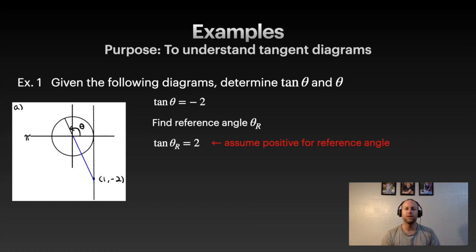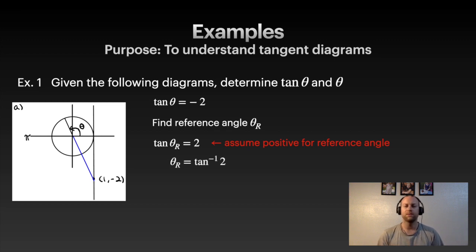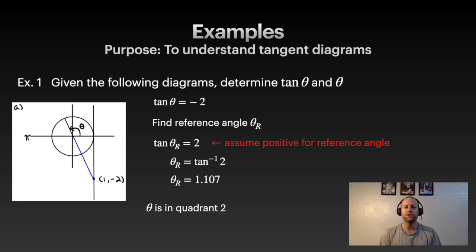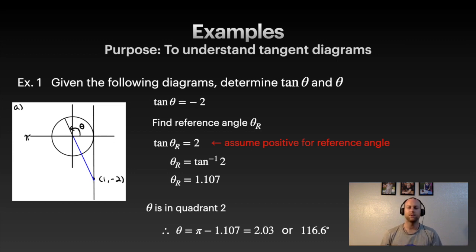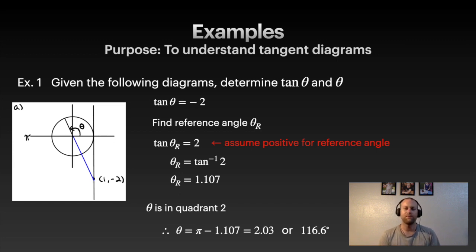When solving for the reference angle, use the positive value with inverse tan. So the reference angle is arctan(2) = 1.107 radians. Since we're in Quadrant 2, we take π minus the reference angle: π − 1.107 = 2.03 radians, or approximately 116.6 degrees — you can round to 117 degrees. That's your answer.